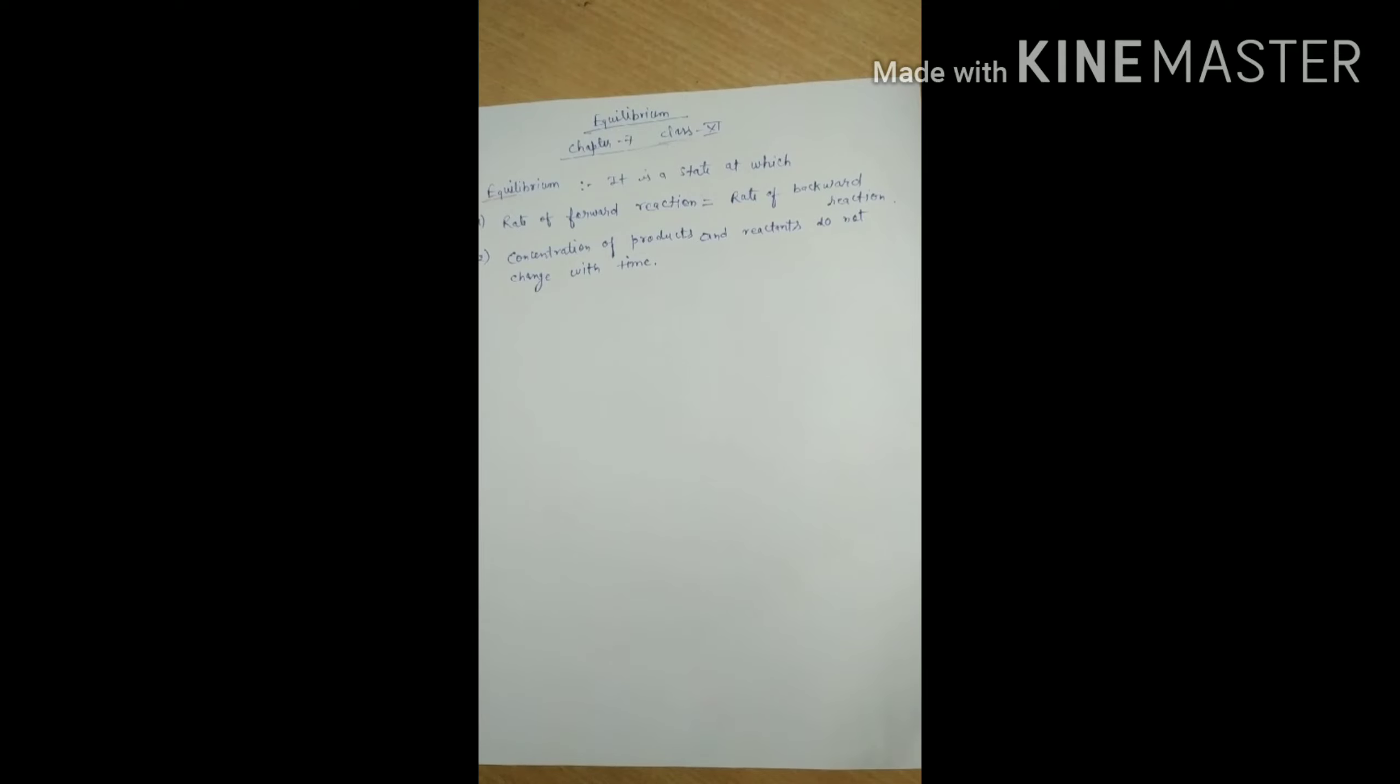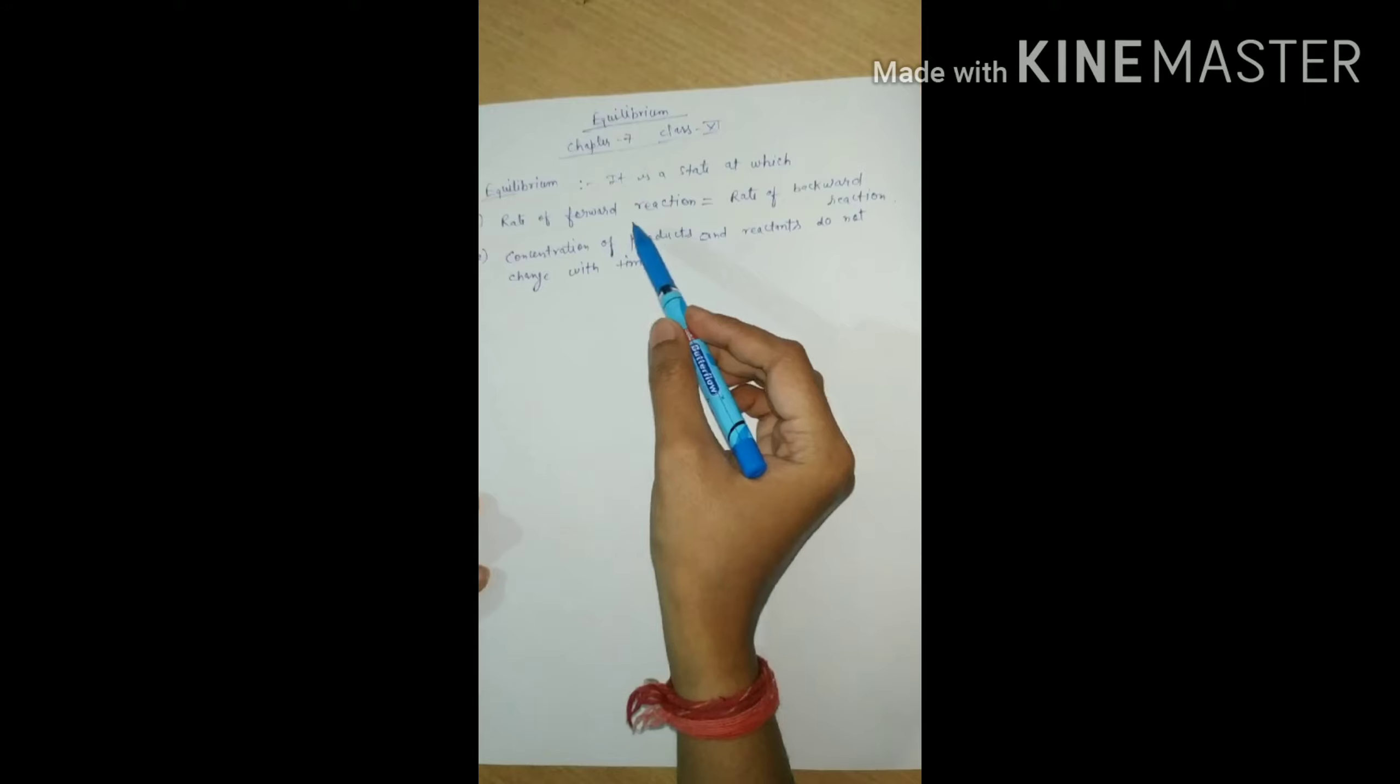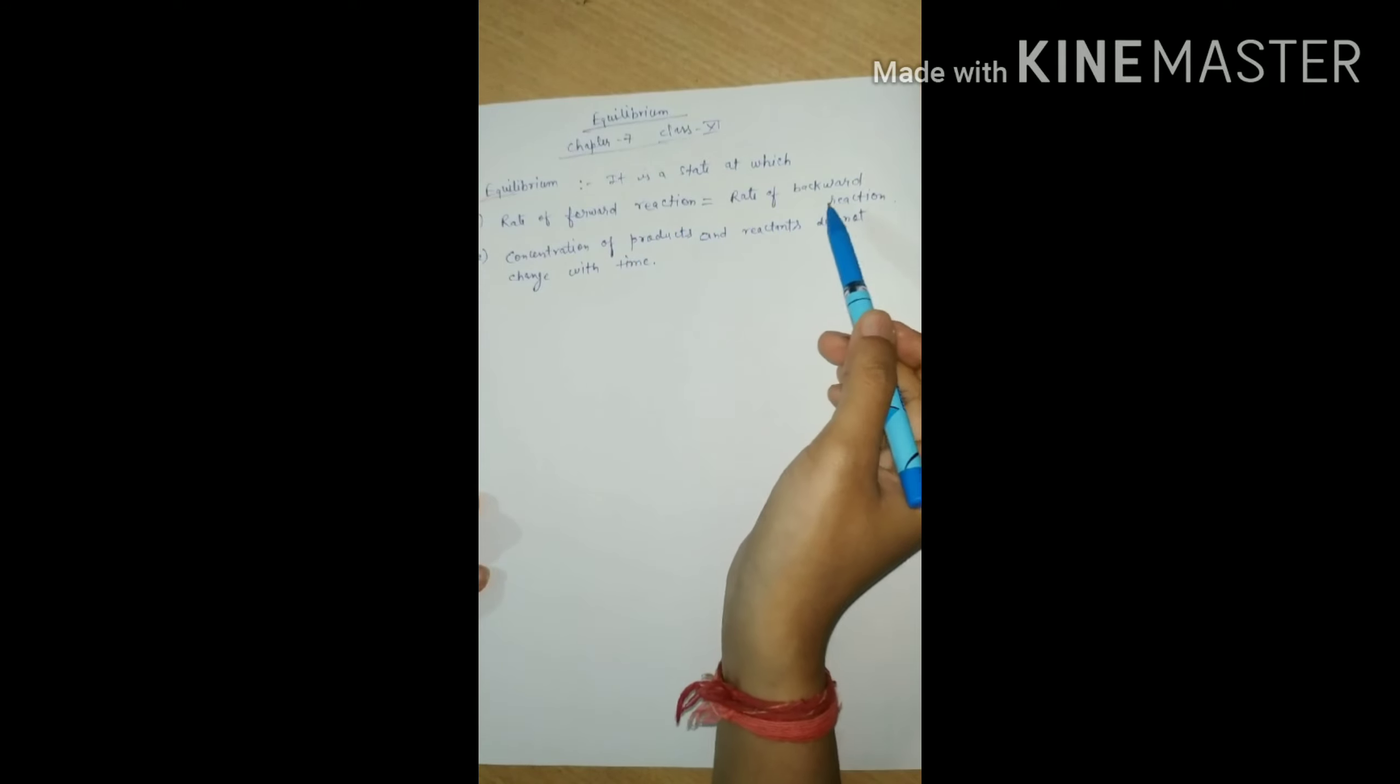So what is meant by equilibrium? In equilibrium, as you can see, there is a term equal, it means there is something should be equal. So in equilibrium, rate of forward reaction is equals to rate of backward reaction. We can define it as a state at which rate of forward reaction is equals to rate of backward reaction.